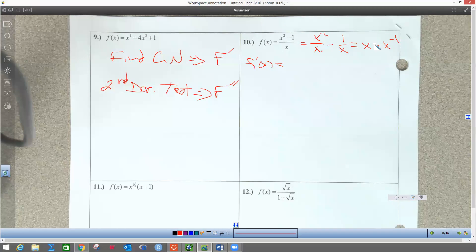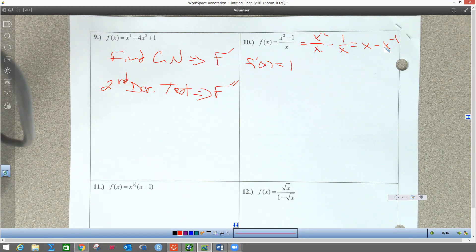The derivative of x is one, and the derivative of negative x to the negative one: I take negative one times negative one to get positive one, then subtract one from the power to get x to the negative two power. I'll move that down to get rid of the negative exponent. Before I find my critical numbers, I like getting a common denominator, so I'll multiply this by x squared over x squared, which gives me x squared plus 1 all over x squared.